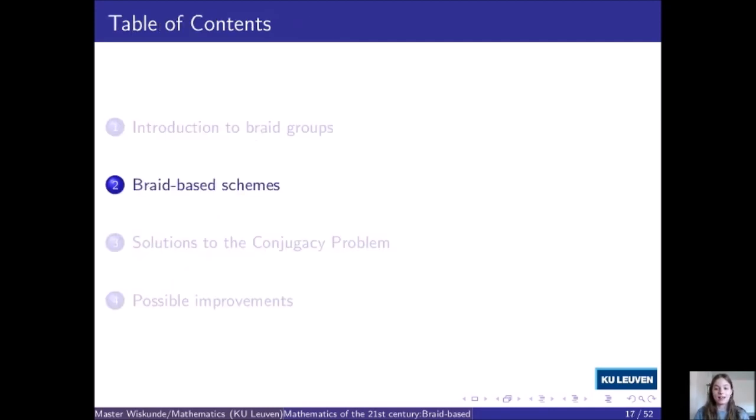Another option is to just use arbitrary braid words. Now multiplication becomes trivial but it becomes more difficult to check whether two braid words are equivalent. However, when drawing random braids — something we do a lot in cryptography — the average complexity of a braid word is not proportional to its length. So if you choose a random braid word with a certain length, you can't be sure what the complexity of the normal form will be. We want control over this complexity to be safe from attacks, so the normal form option is actually better. That was everything about braid groups; now Peter will show some cryptographical schemes.